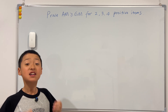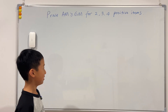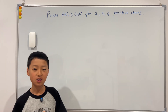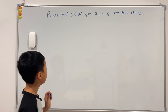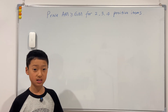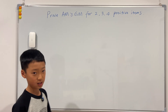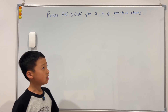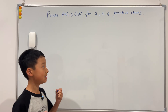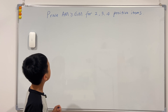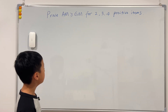Hi guys, welcome back to another video of me teaching. Today I have this question on the board for you. Before I get into it, a commenter told me he didn't really understand what AM greater than or equal to GM means. I couldn't find your comment, but I still made the video. This video is very similar to the last video — it uses the same logic but is a simplified question. So we want to prove that AM is greater than or equal to GM.